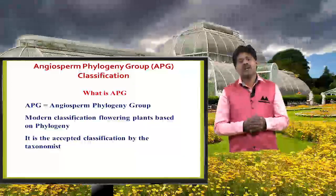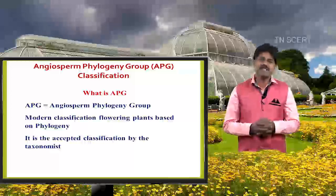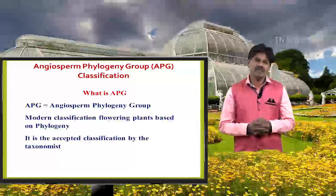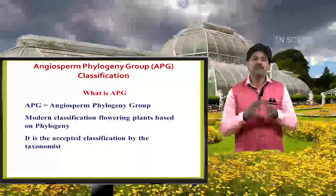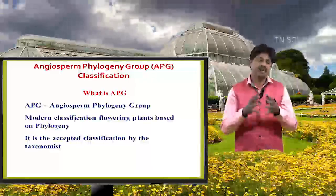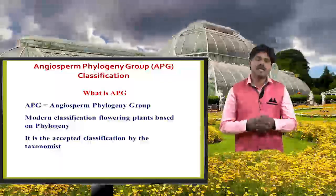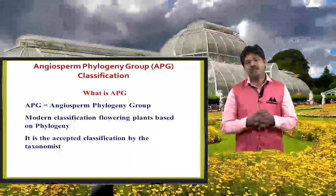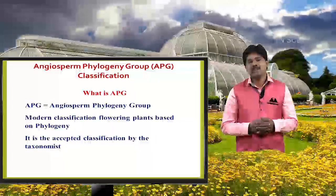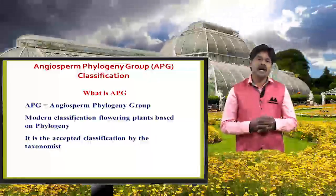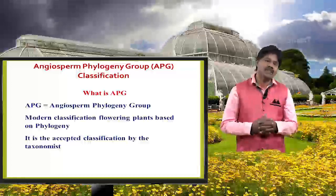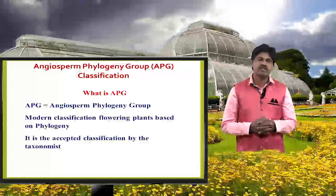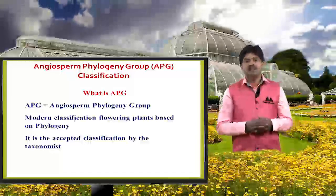You know very well about many classifications — for example, artificial, and Bentham and Hooker's natural classification, and many phylogenetic classifications. But APG is a classification accepted by most taxonomists around the world. It is a modern classification based on phylogenetics.